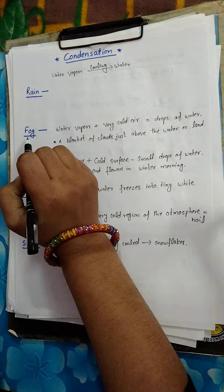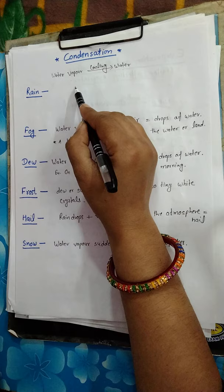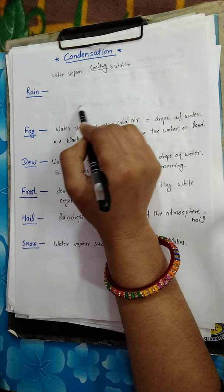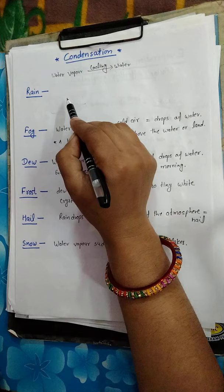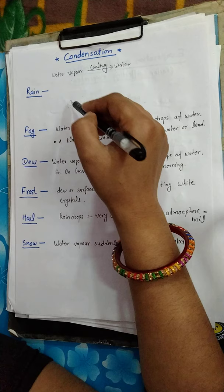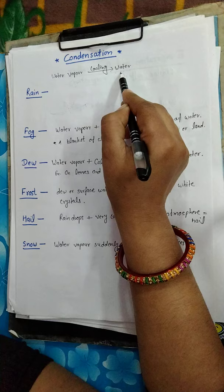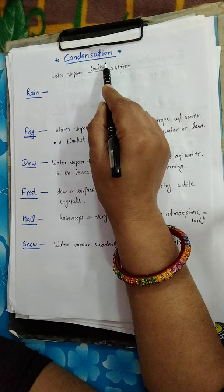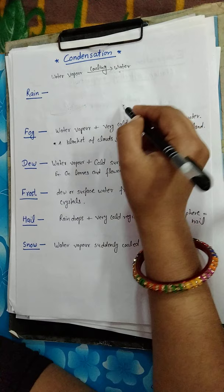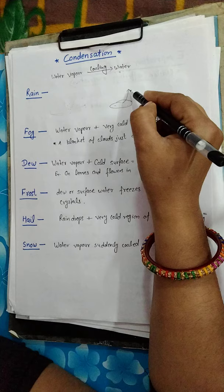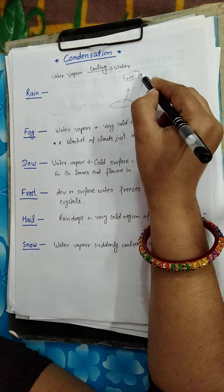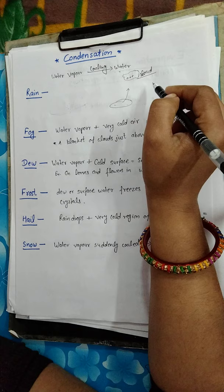The next topic is rain. How does rain happen? We all know that due to the heat from the sun, water from the surface evaporates and becomes water vapor. This water vapor rises up into the atmosphere.